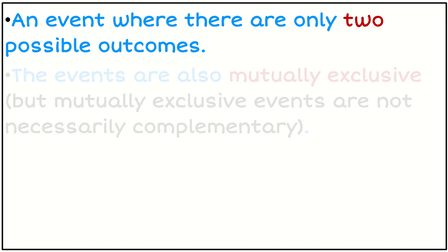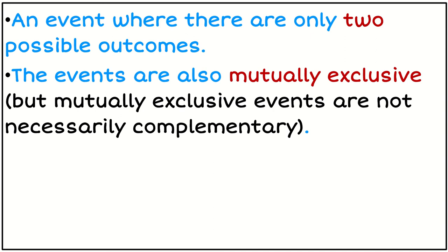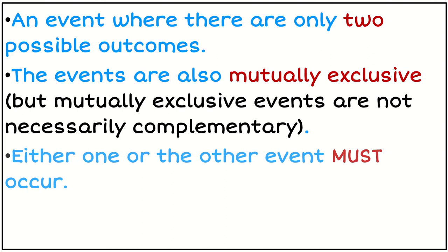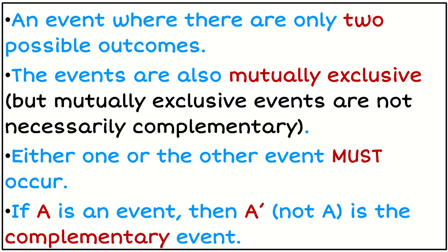So a complementary event is something where there's only two possible outcomes. So those events are also mutually exclusive, though it doesn't always work the other way around. So mutually exclusive events may not be complementary. So either one or the other event must occur.